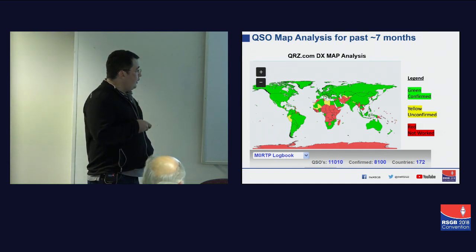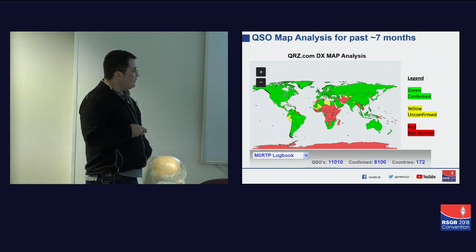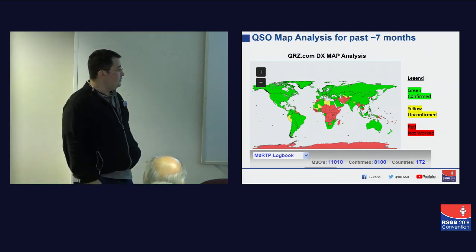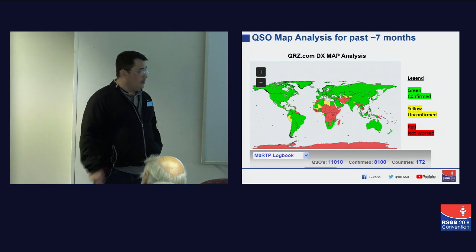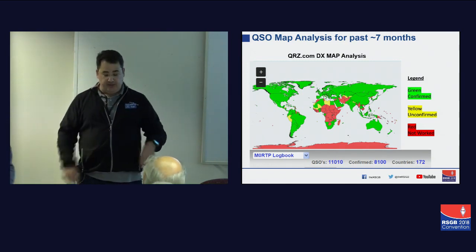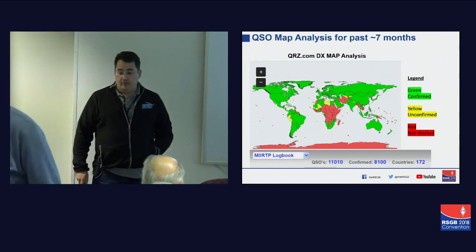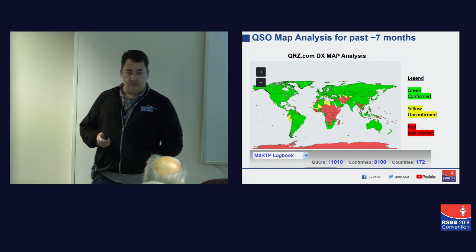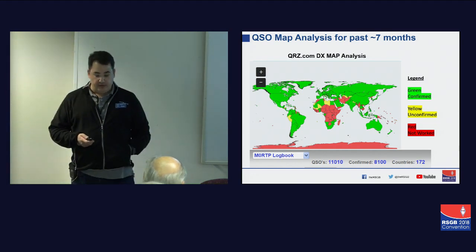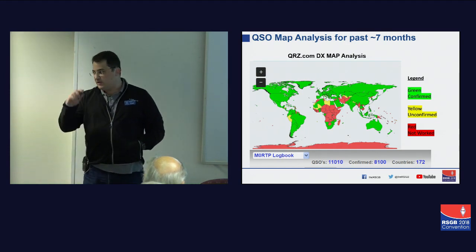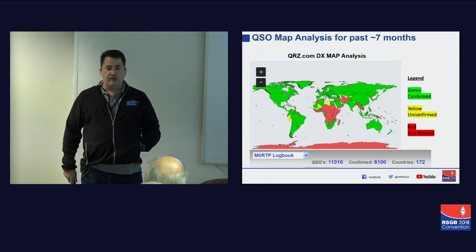The only area I've really struggled with has been Africa — this has predominantly been FT8 — and I think it's partially down to the fact that I'm firing east-west and there's not a lot of activity in Africa. But other than that, by all accounts 11,000 QSOs, 8,100 confirmations, and 172 countries worked in a period of six to seven months — it's not bad. So clearly it's a little bit more than a radiating dummy load.